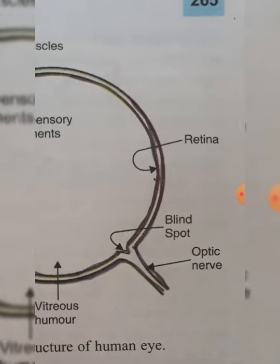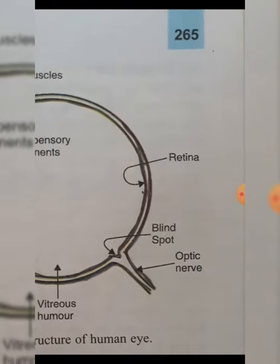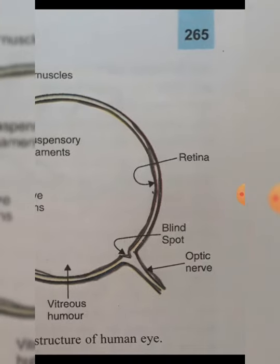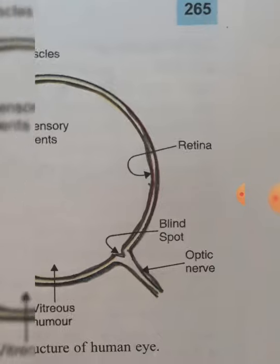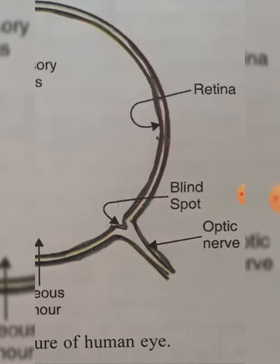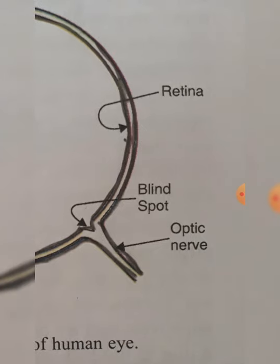The image formed on the retina is conveyed to the brain by the optic nerves, which are connected to the brain. Whenever an image is formed on the retina, the optic nerves convey that image to the brain, and the brain gives rise to the sensation of vision.